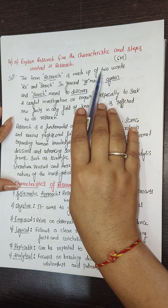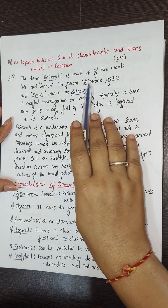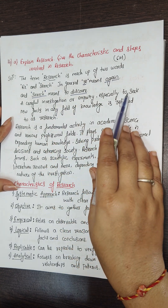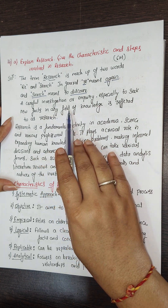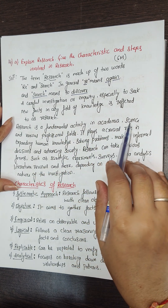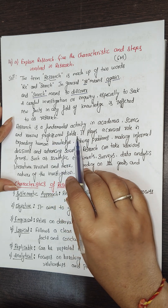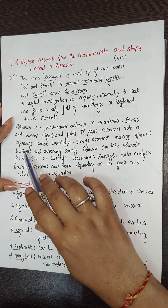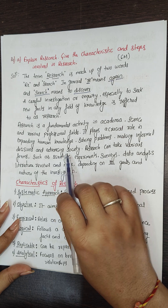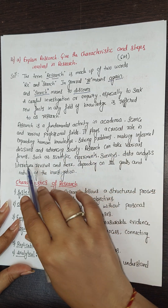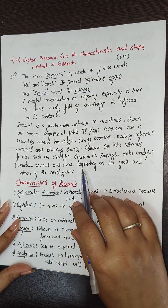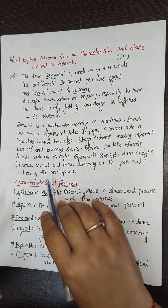The term research is made up of 2 words: 're' and 'search'. In general, 're' means again and 'search' means to discover. A careful investigation or inquiry, especially to seek new facts in any field of knowledge, is referred to as research. Research is a fundamental activity in academia, science, and various professional fields. It plays a crucial role in expanding human knowledge, solving problems, making informed decisions, and advancing society. Research can take various forms such as scientific experiments, surveys, data analysis, literature reviews, and more.